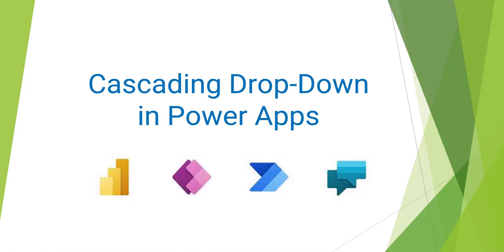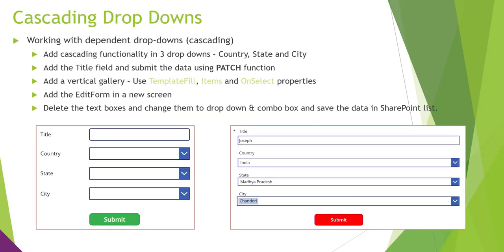Hello everyone, I am Vipul Jain and today I will be showcasing how you can implement cascading drop-down behavior in PowerApps. I will be showcasing it between three drop-downs — country, state, and city — where I will be demonstrating the cascading functionality. Let's see this in action.